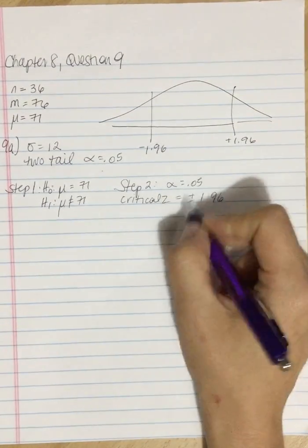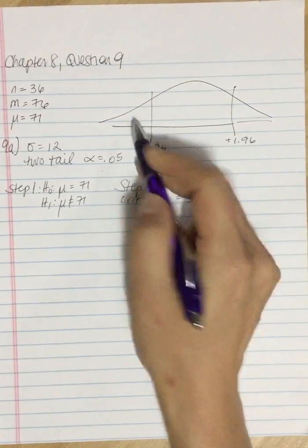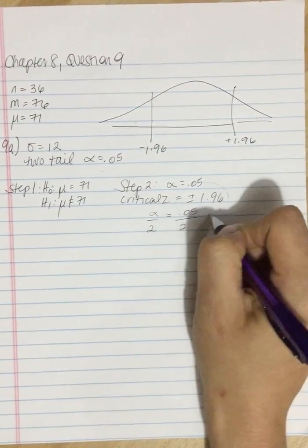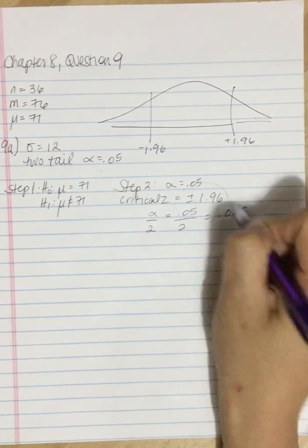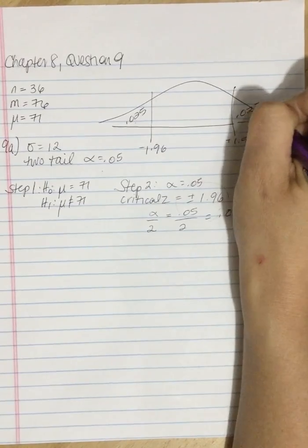And the way that I got that value is I had to take alpha and divide by two because I've got two tails. So I've got 0.025 here and 0.025 over here.